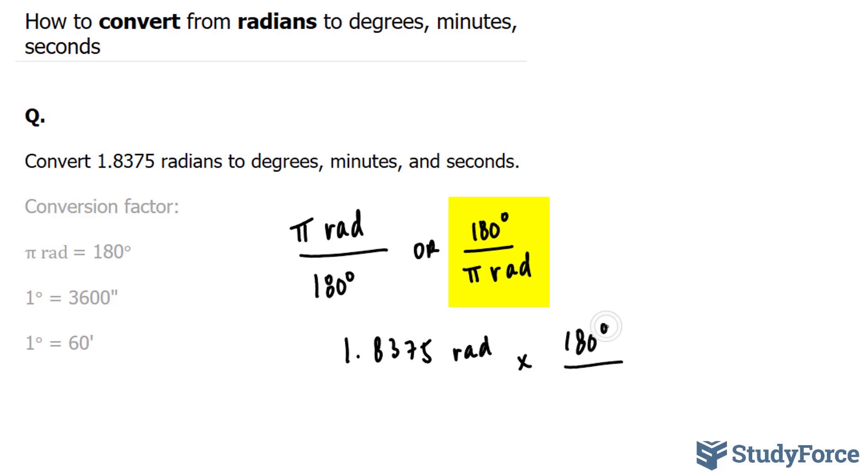You have 180 degrees at the top, this unit, and pi radians, this unit at the bottom. This conveniently gives us a situation where the radians, this one and this one cancel out, leaving you only with degrees. That being said, let's multiply this out.